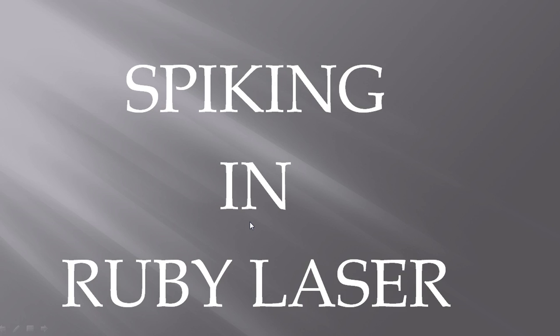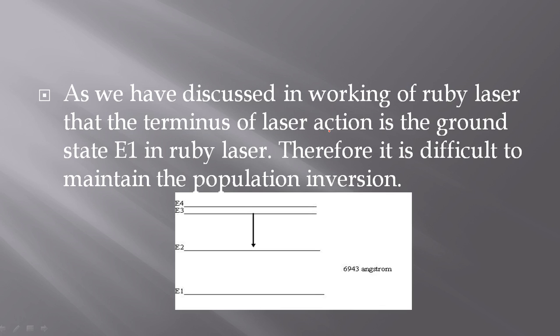Hello friends, today I will discuss a very important process in Ruby laser: spiking in Ruby laser. As we have discussed in the working of Ruby laser, the terminus — the end of laser action in Ruby laser — is the ground state. Therefore it is difficult to maintain the population inversion.